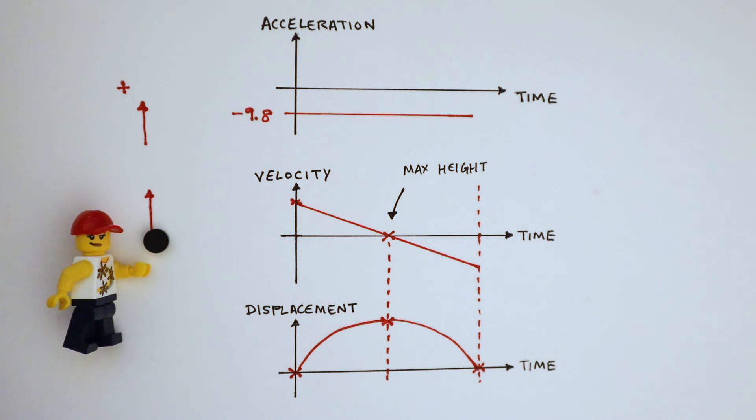Here are the three motion graphs for an object thrown upwards, and then experiences freefall.